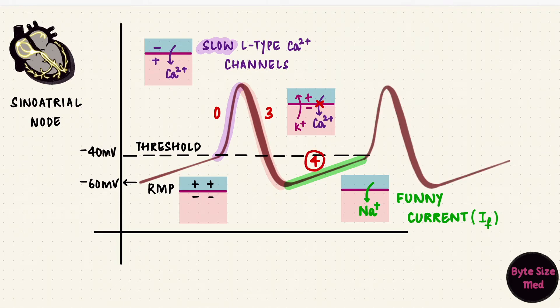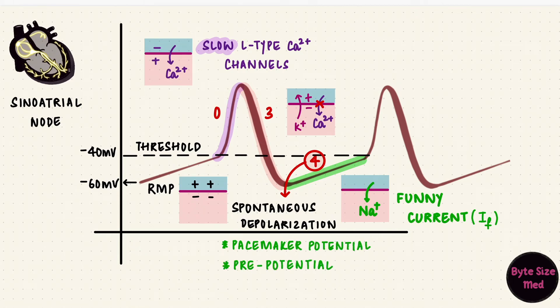This is phase four of the action potential, which is spontaneous depolarization. This is also called the pacemaker potential or the pre-potential. It's mostly because of the sodium entry creating the funny current. But towards the later part of the pre-potential, calcium also contributes. This is through the T-type calcium channels. The T stands for transient. The upstroke is by the L-type calcium channels.